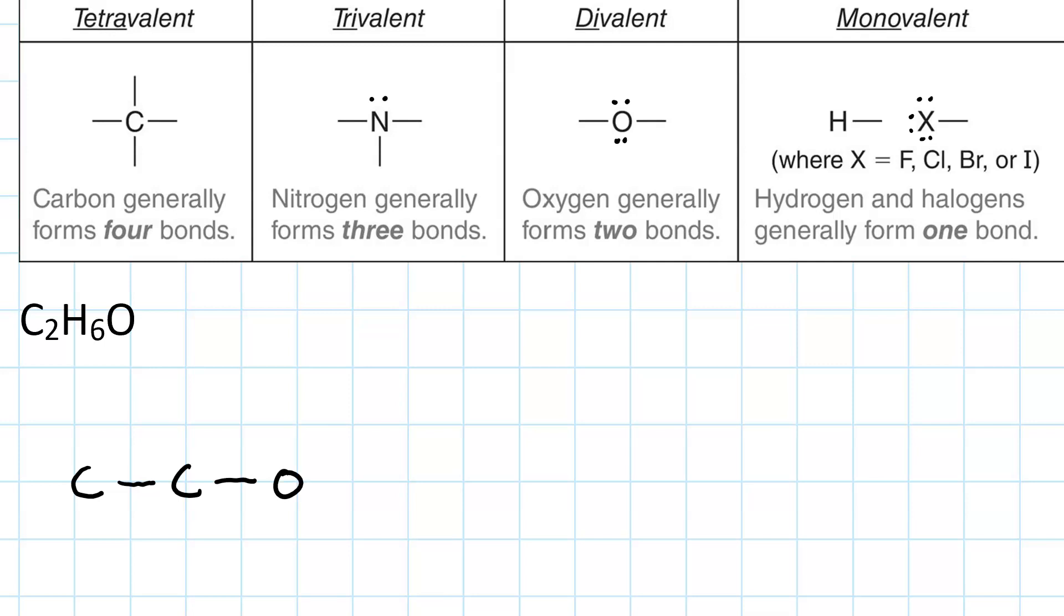Then we fill in hydrogens until each carbon has four bonds and the oxygen has two. This molecule is ethanol.